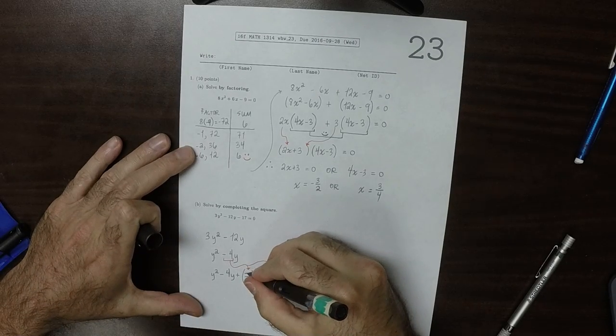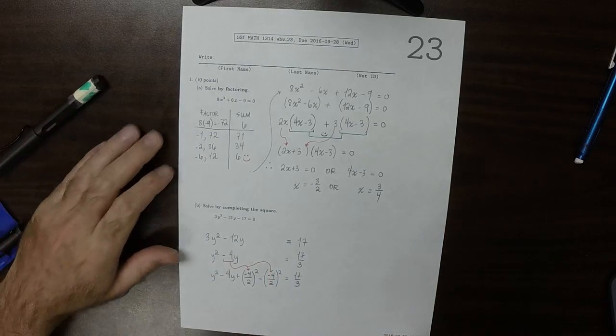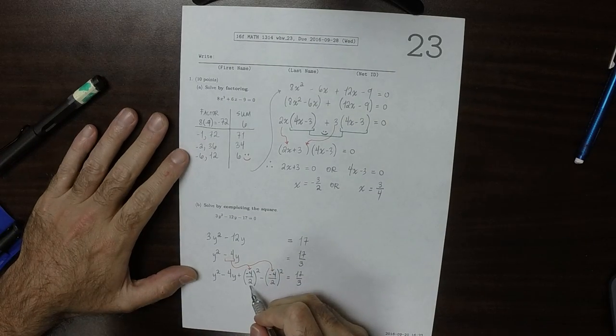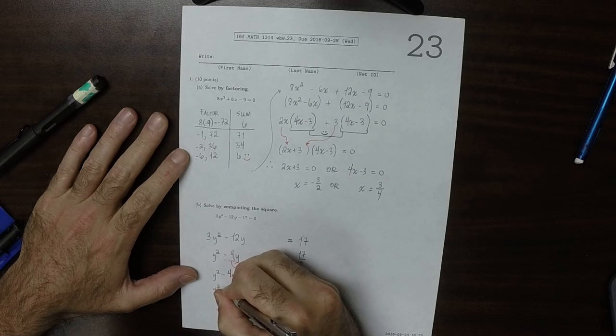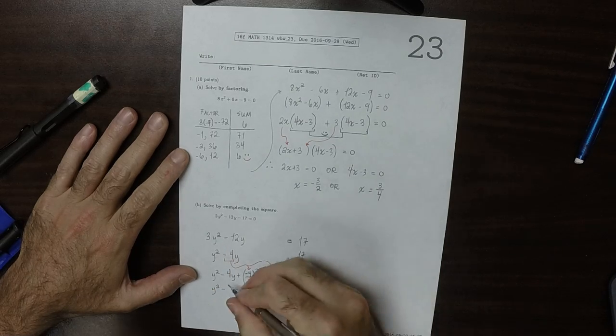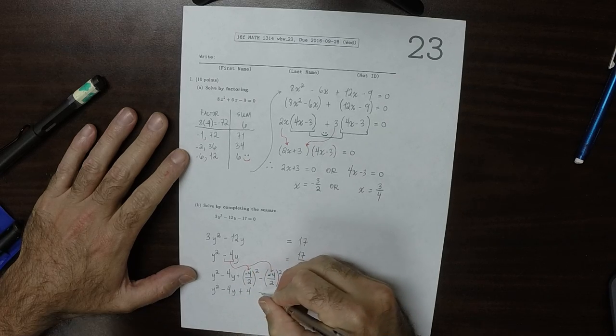That would be negative 4. So negative 4 over 2 is negative 2 squared, that is 4. What we're saying is we find it expedient to add 4, and then subtract 4.